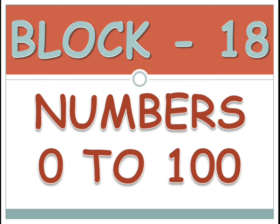In topic 2 we have learned numbers 1 to 100, where we have written the numbers 1 to 100 and also the number names. In the third topic we have learned the skip counting of 2, 3, 5 and 10. In the same way you can write skip counting of 4, 6, 7, 8 — any number — you have to open those fingers, count it, and write it.